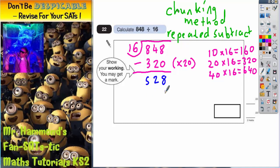So I now need to subtract another chunk of 16s. Well, I'm going to do the same chunk of 16s again, so I'm going to do another 20 lots, because I already know that 20 lots is 320. So we'll subtract another 320. So let's see what this gives us. 8 take away 0 is 8, 2 take away 2 is nothing, 5 take away 3 is 2. So we're now down to 208.